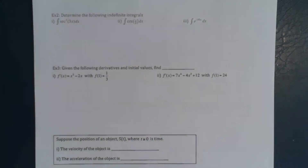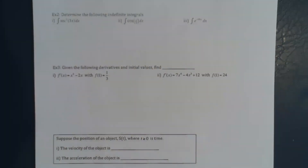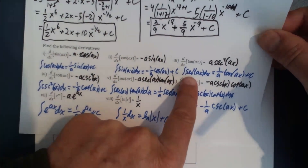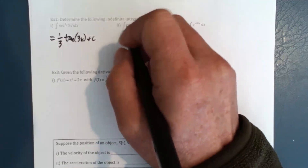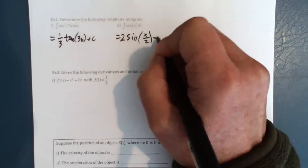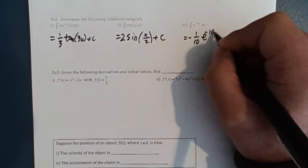Let's use our new formulas on page two, keeping those formulas off to the side. The integral of secant squared of 3x: using our formula where a equals 3, this is going to be one-third tangent of 3x, plus C. For cosine of x over 2, a is one-half, so this is one over one-half, which is just 2, times sine of x over 2, plus C. And here a is negative 10, so this is negative one-tenth e to the negative 10x, plus C.